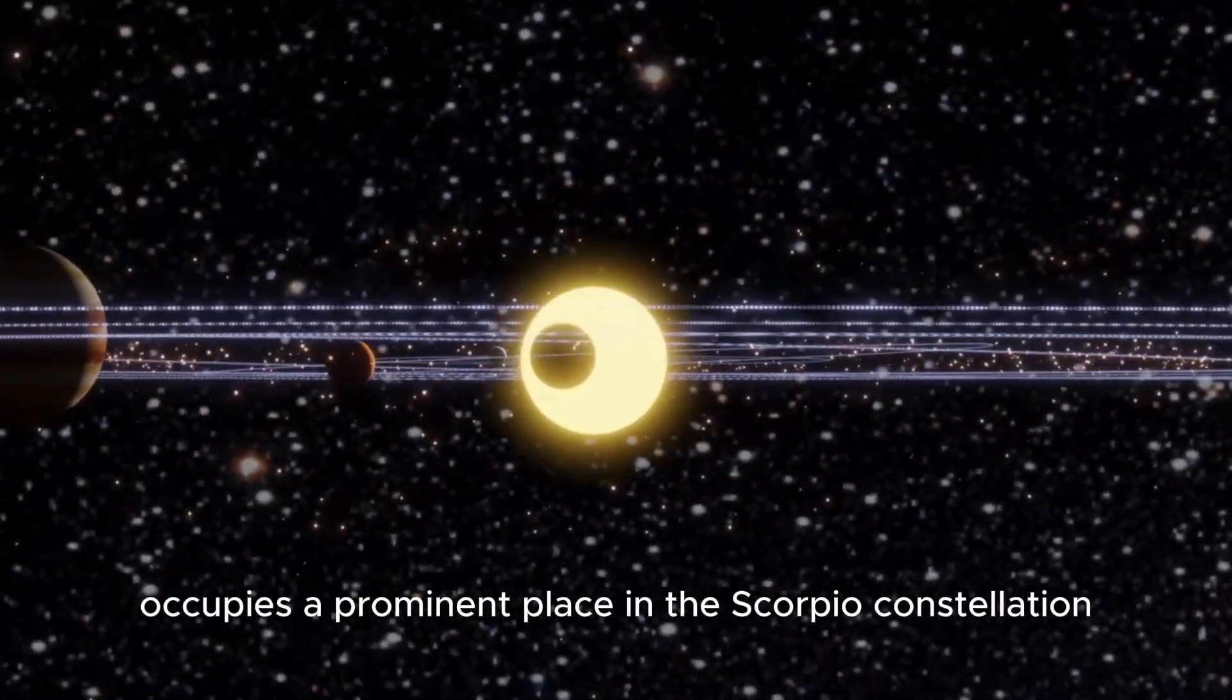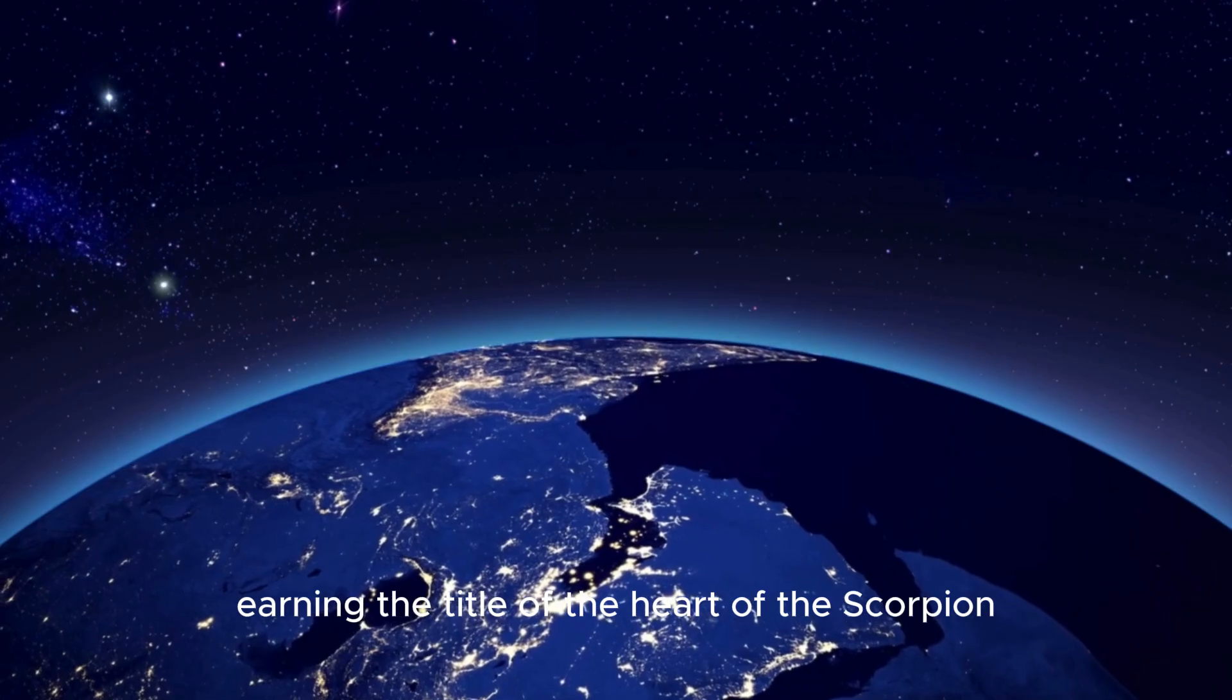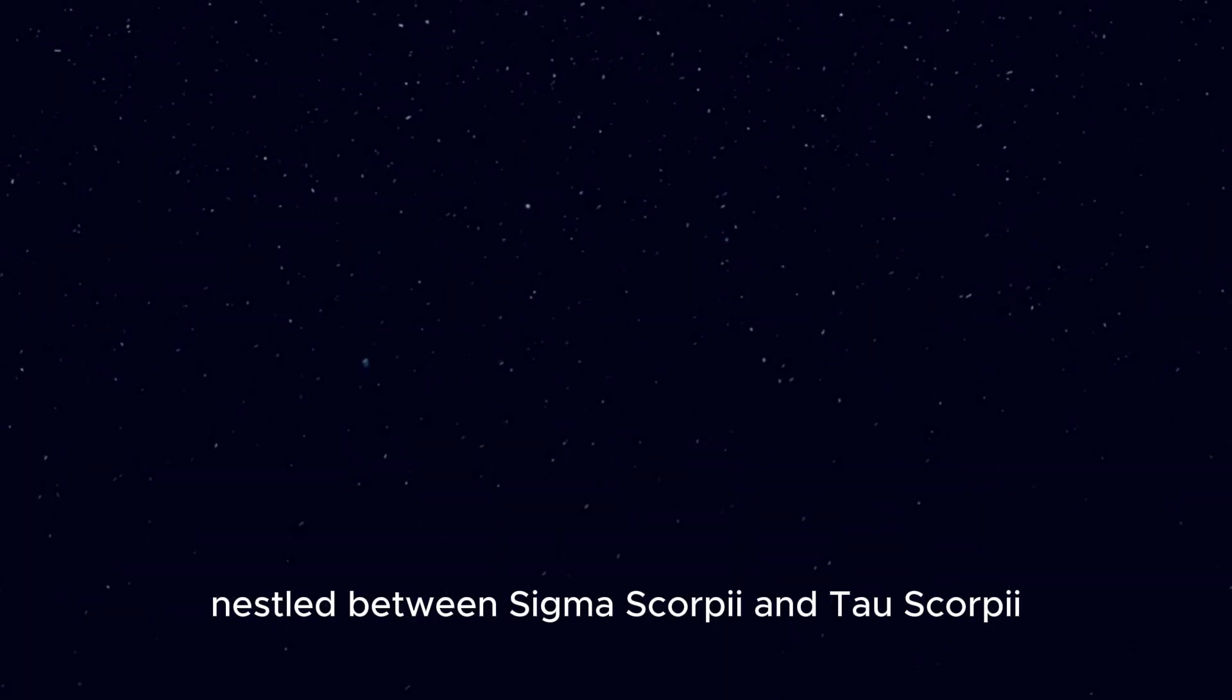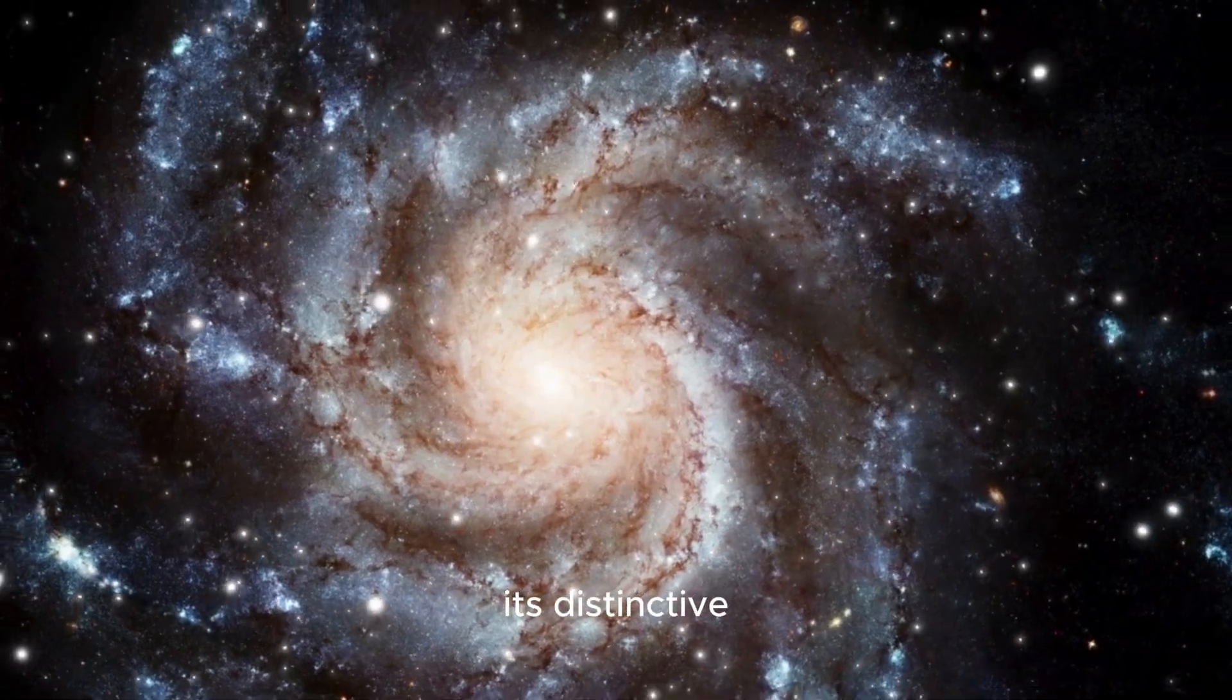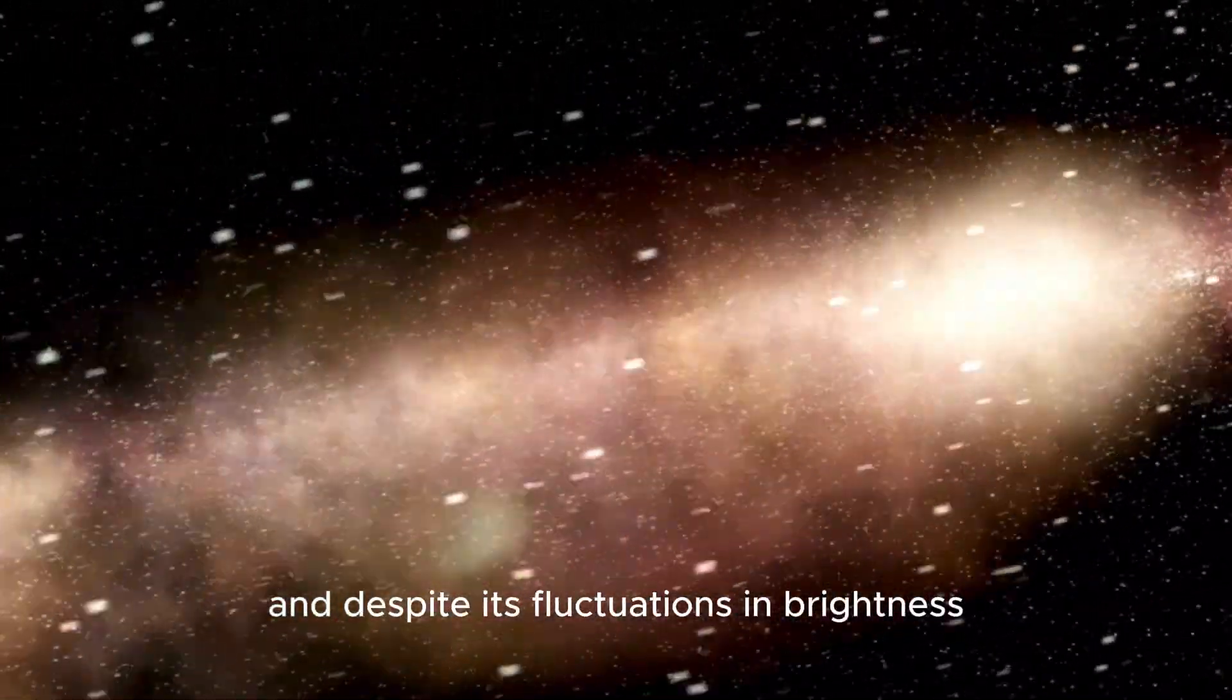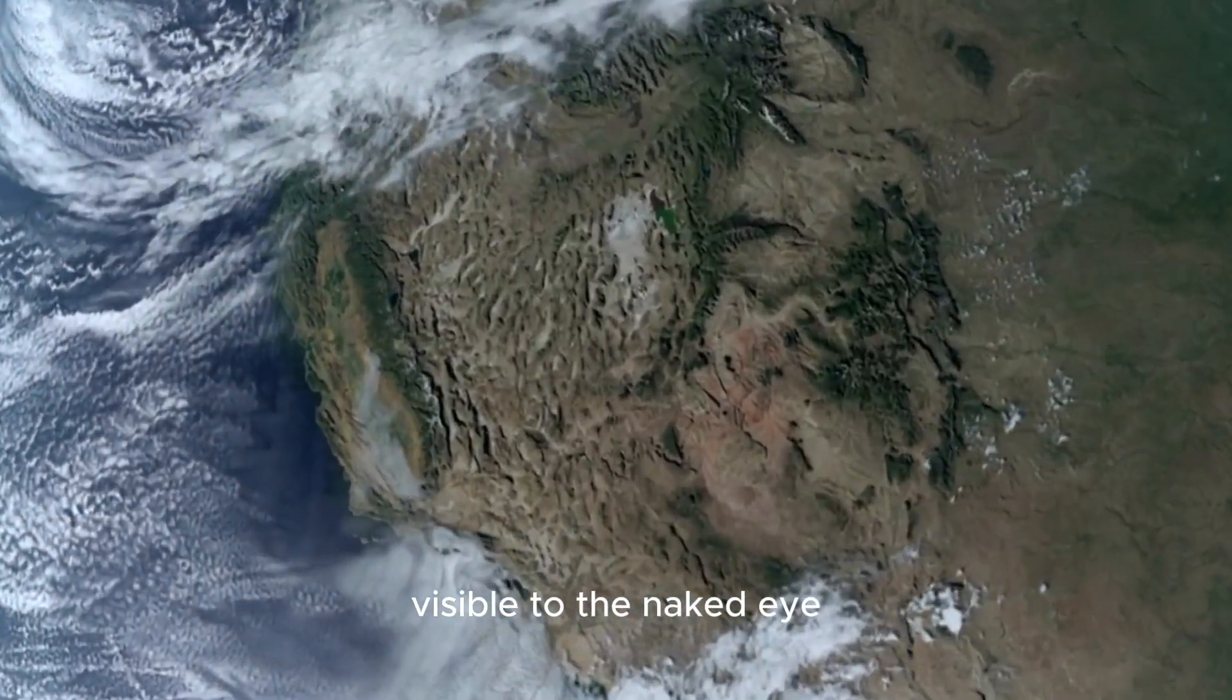Antares occupies a prominent place in the Scorpius constellation, earning the title of the Heart of the Scorpion. Nestled between Sigma Scorpii and Tau Scorpii, it forms a celestial trio that has captivated astronomers for centuries. Its distinctive reddish hue sets it apart from other stars, and despite its fluctuations in brightness, it remains one of the fifteen brightest stars visible to the naked eye.